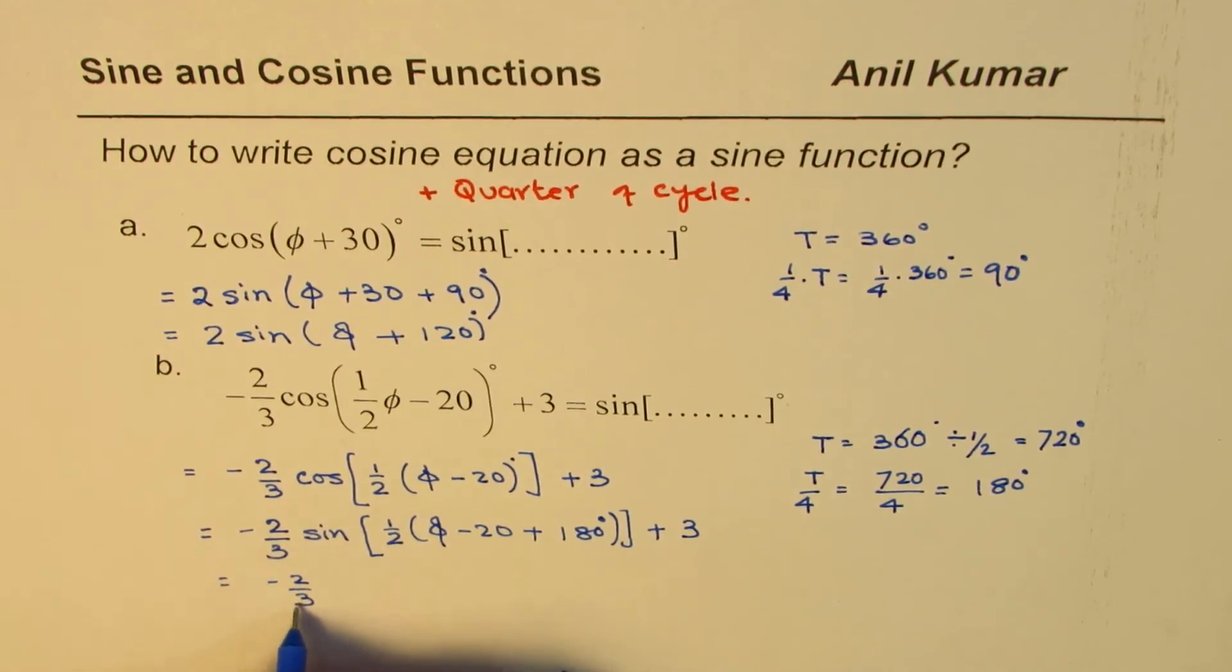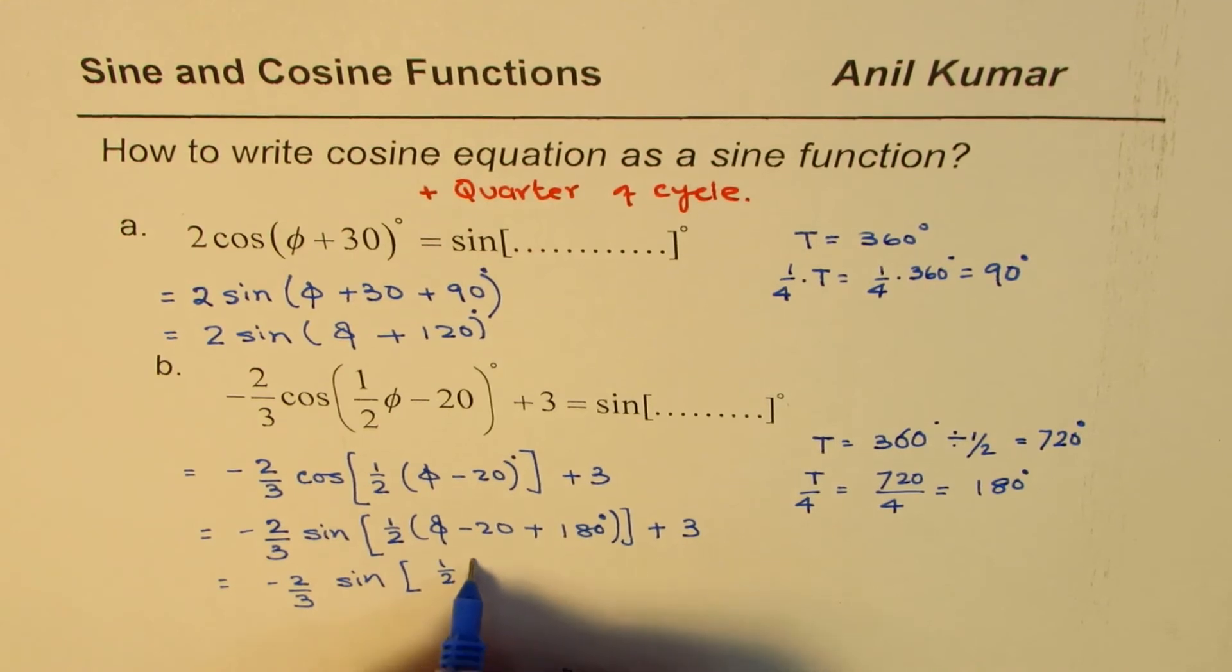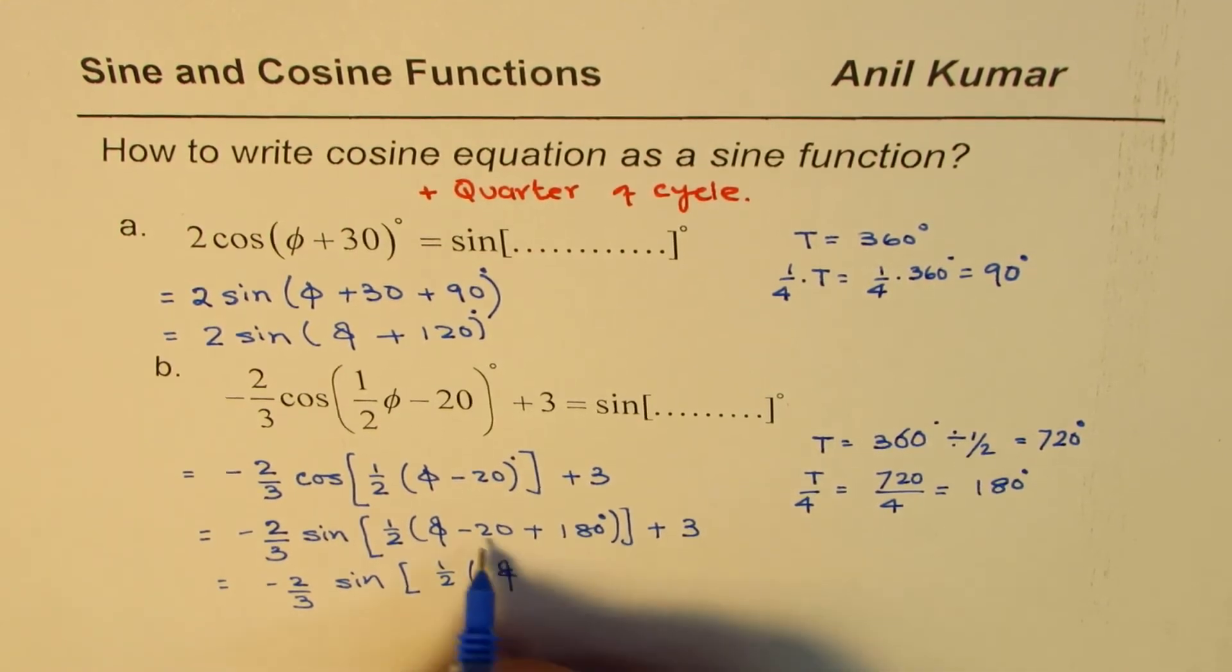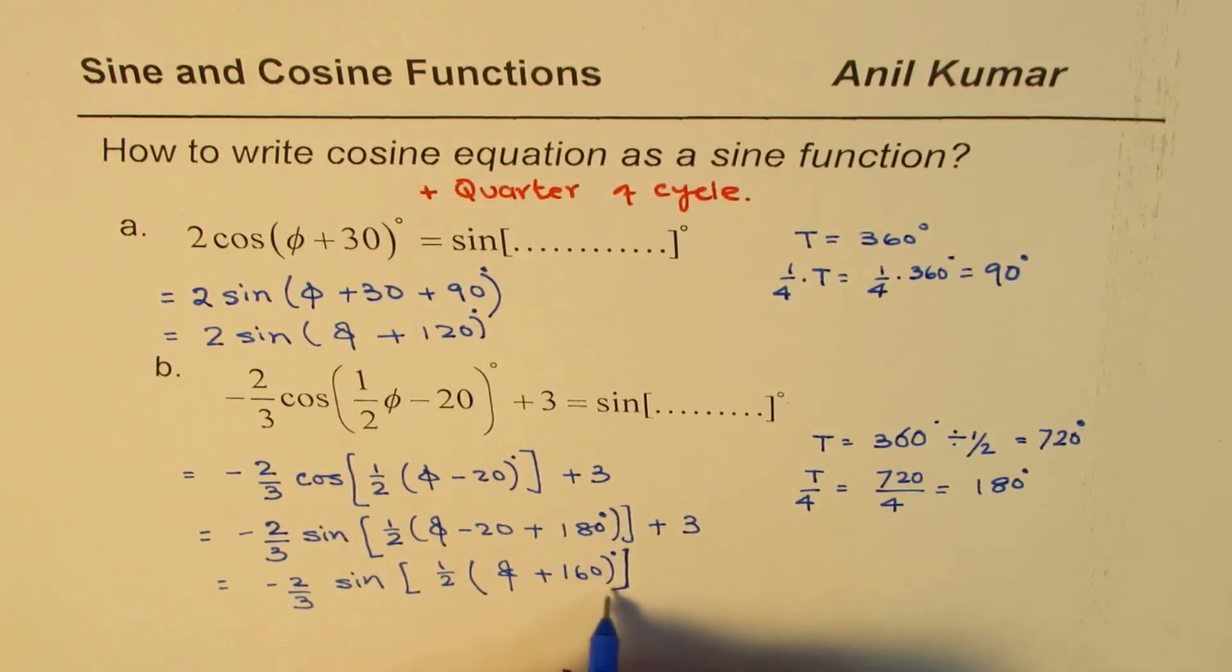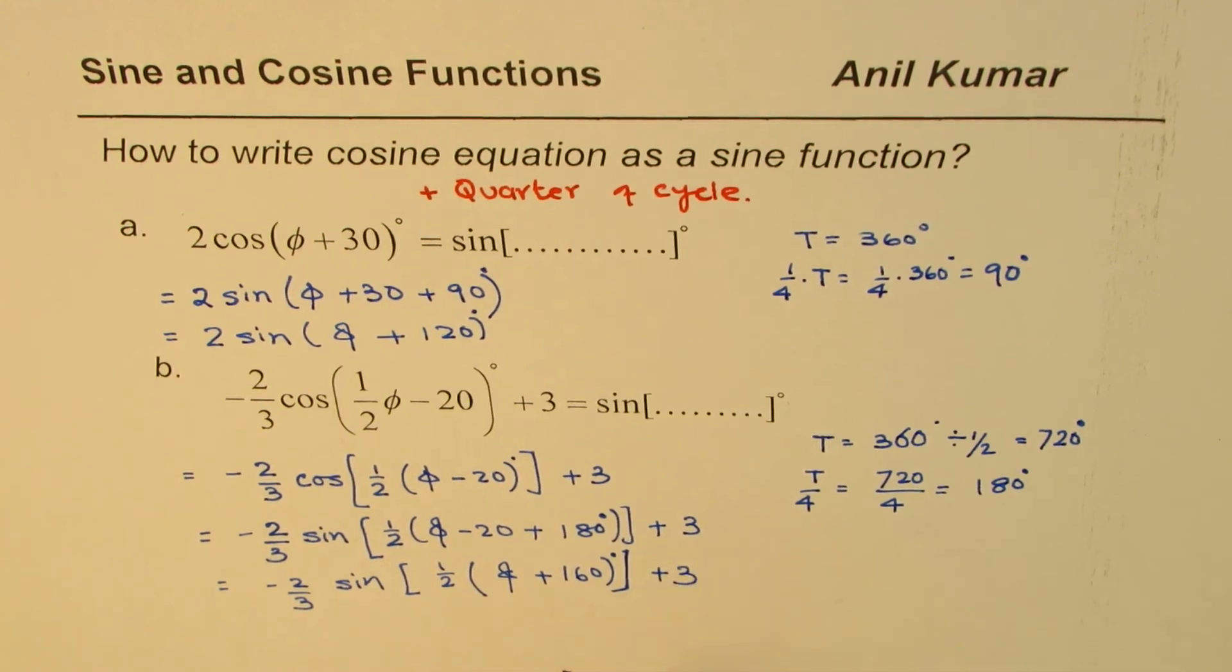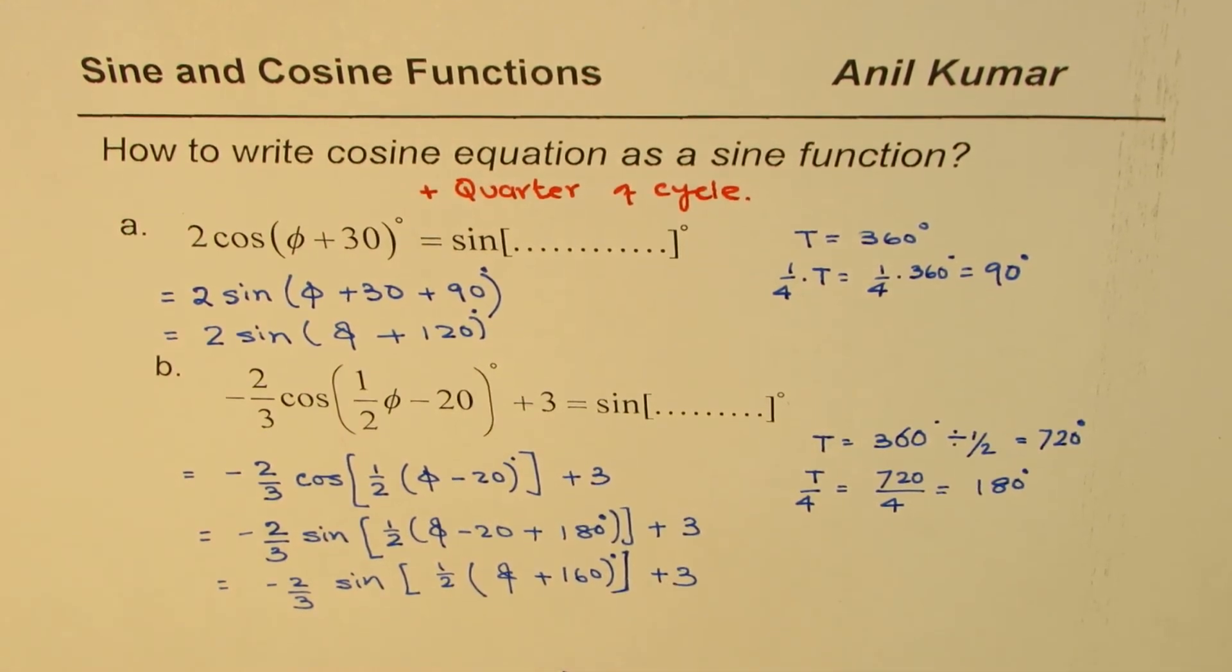So this could be written as -2/3 sine 1/2... So if you take away 20 from 180 you get 160 degrees, plus 3. So that is how you could write the given cosine as sine function.